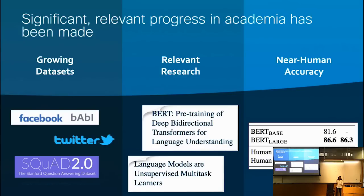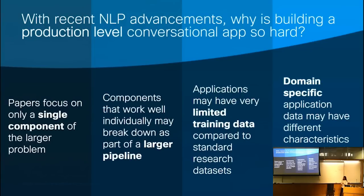While today's chatbots are a difficult problem, in the academic world there's been a lot of relevant progress with a growing number of publicly available datasets, as well as many recent papers published in areas like language modeling and dialogue systems. Some of these papers have even reported near human accuracy on certain subtasks of question answering or reading comprehension. So with all of these advancements in the academic space, why is it still such a difficult problem to build a high quality conversational assistant?